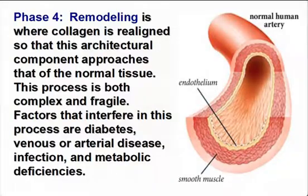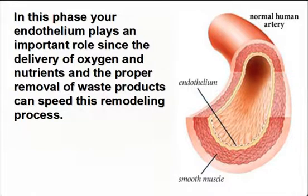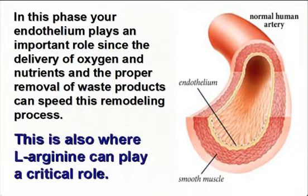Phase four, remodeling, is where collagen is realigned so that this architectural component approaches that of the normal tissue. This process is both complex and fragile. Factors that interfere in this process are diabetes, venous and arterial disease, infection, and metabolic deficiencies. In this phase, your endothelium plays an important role since the delivery of oxygen and nutrients and the proper removal of waste products can speed this remodeling process. This is also where L-arginine can play a critical role.